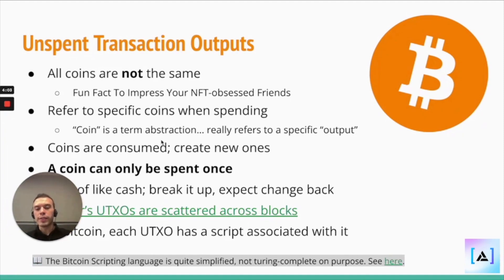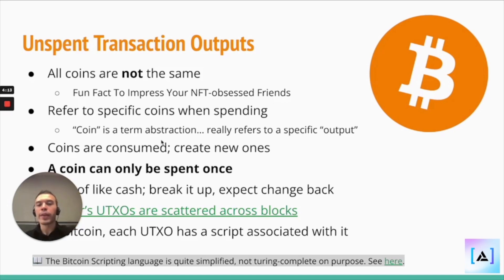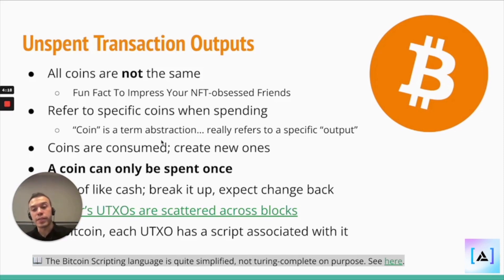So when you receive some Bitcoin, you actually receive a specific UTXO, allowing you to spend that amount of Bitcoin specifically. So whenever you want to respend that Bitcoin, you have to point to that specific UTXO.